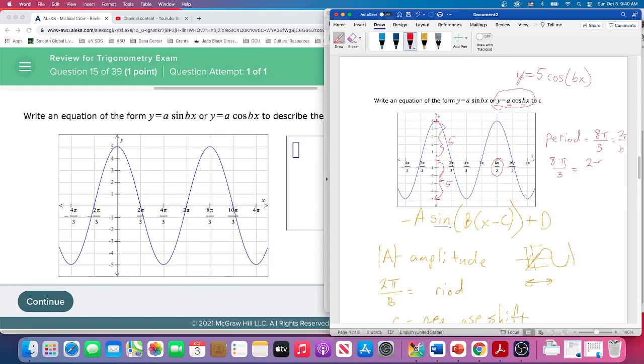equals two pi over b. And then now we just need to solve for b. The way I like to do that, we've got two fractions equal to each other, let's cross multiply.